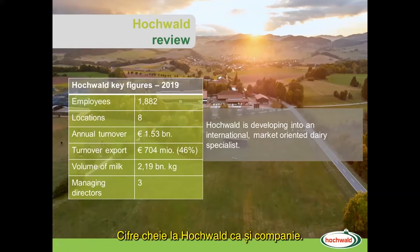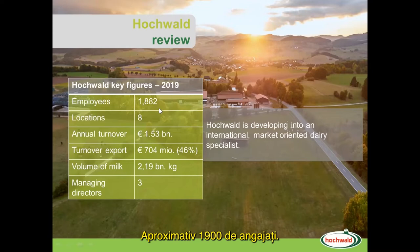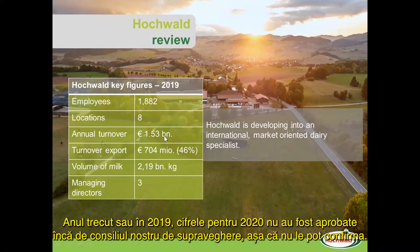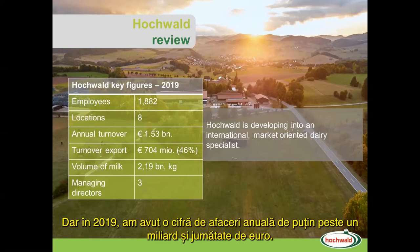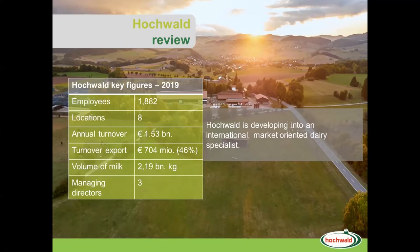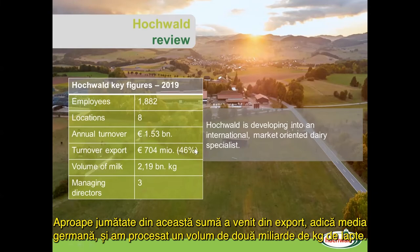Some key figures on Hochwald as a company: about 1,900 employees, we have eight different factories. In 2019, we had an annual turnover of just over one and a half billion euros. Almost half of that came from export, which is about the German average. And we processed a volume of 2.2 billion kilograms of milk.